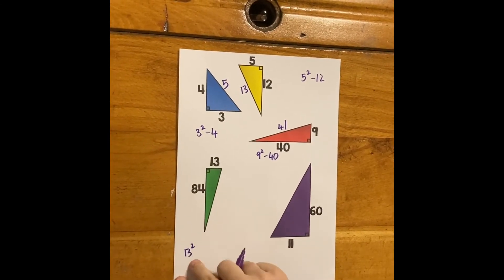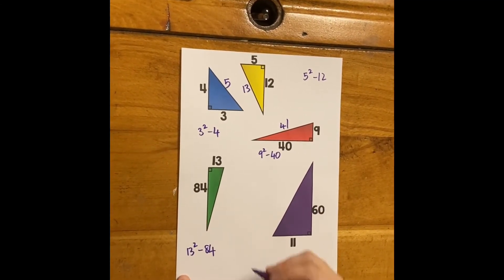13 squared, 169, take away 84, that must give me 85.